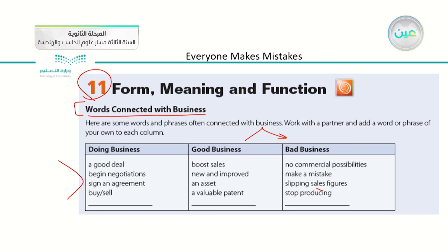Number two is good business, and number three is bad business. For doing business, we say: a good deal, begin negotiations, sign an agreement, buy or sell. All these words, phrases, or expressions can be used by anyone who is doing business. For good business, we have: boost sales, new and improved, an asset, a valuable patent. For bad business, we have: no commercial possibilities, make a mistake, slipping sales figures, stop producing. These expressions refer to a bad business, while the previous ones refer to a good business.